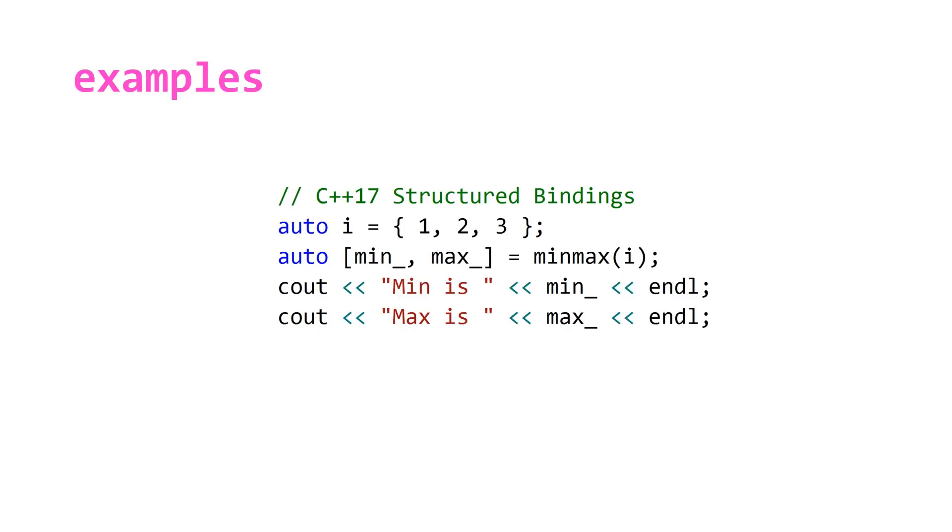For the final version of our minmax algorithm, as well as the min and max algorithms, it can take an initializer list as a parameter so this will output min is 1 and max is 3.